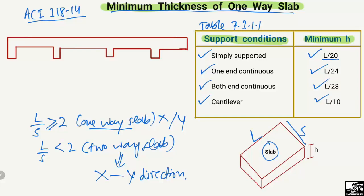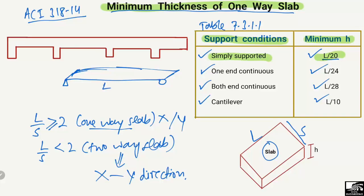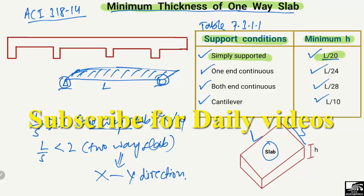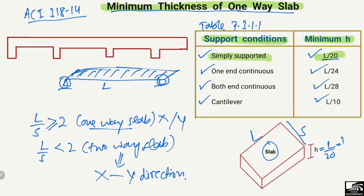Starting from the simply supported case: for a simply supported one-way slab the minimum thickness is L/20. If this is the slab and this is the length of the slab, it is simply supported because it is supported only by two supports — one on each side. The minimum depth or thickness h will be equal to L/20. For example, if L is 2000 mm, then dividing by 20 gives a thickness of 100 mm.